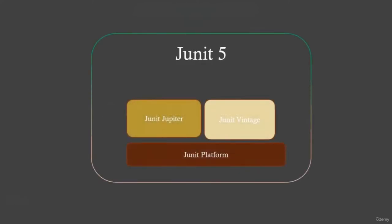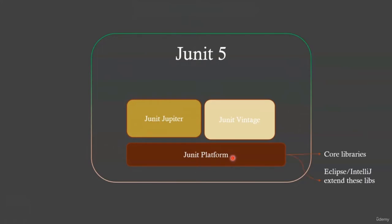The overall JUnit 5 architecture comprises three components. There is a basic JUnit platform that is used to run and execute tests. Any IDE, be it Eclipse or IntelliJ or any other, must extend this platform and build their extensions on top of it. Next, there is a newer component called JUnit Jupiter. This provides newer extension models for writing tests that support versions of Java 8 and above. There were newer coding styles and libraries — it included streams, functional programming, Lambdas, and more. The Jupiter component supports all of them.